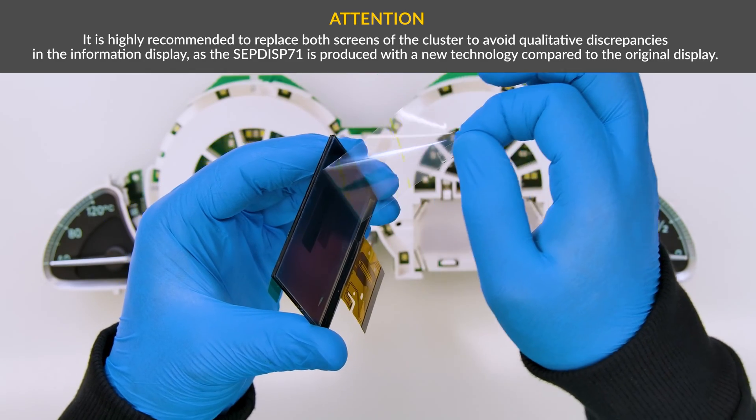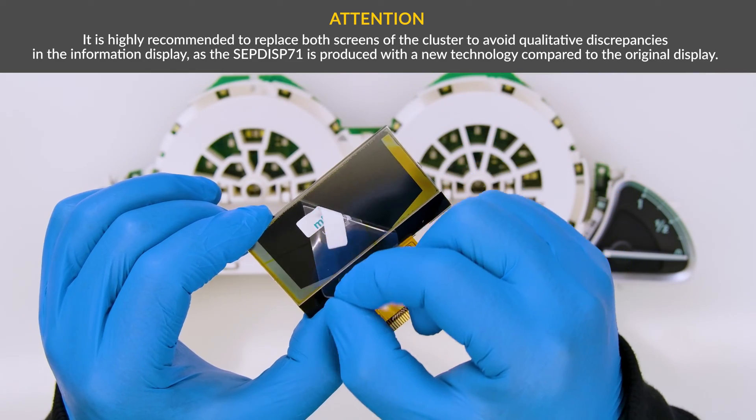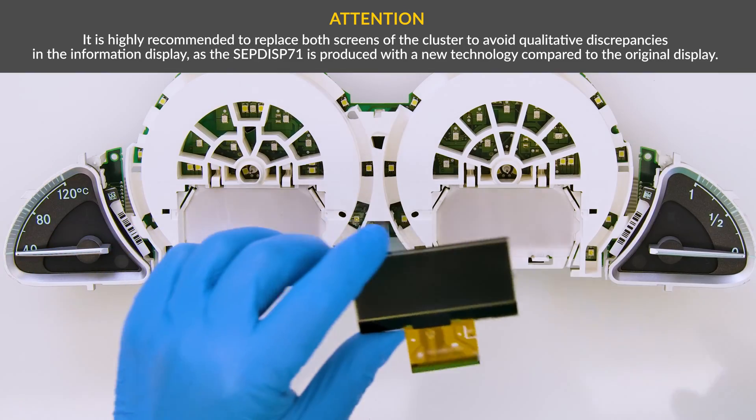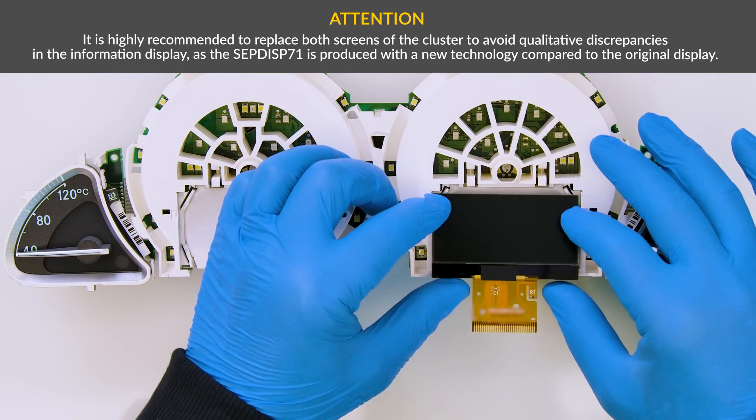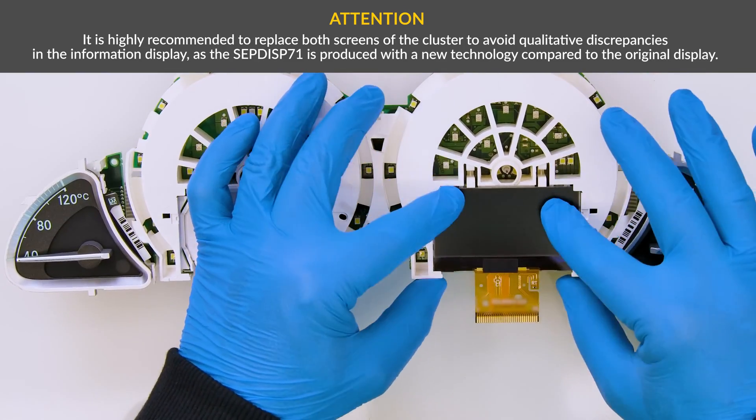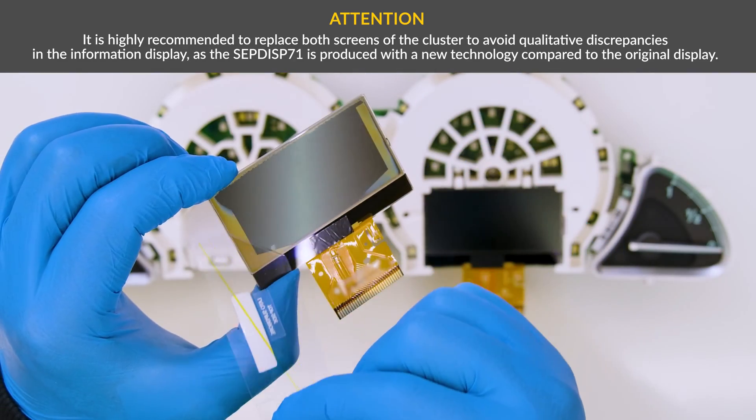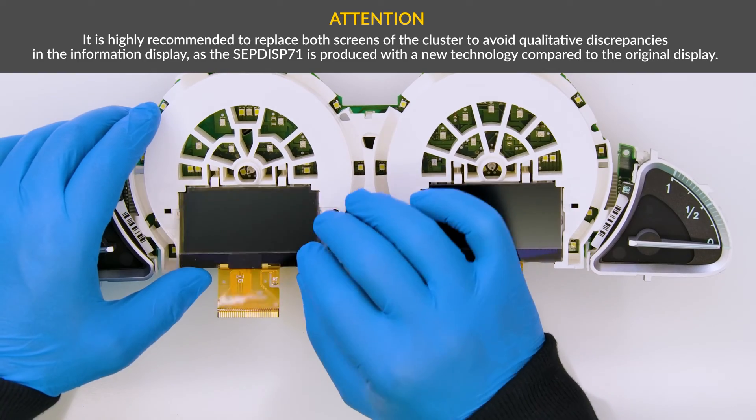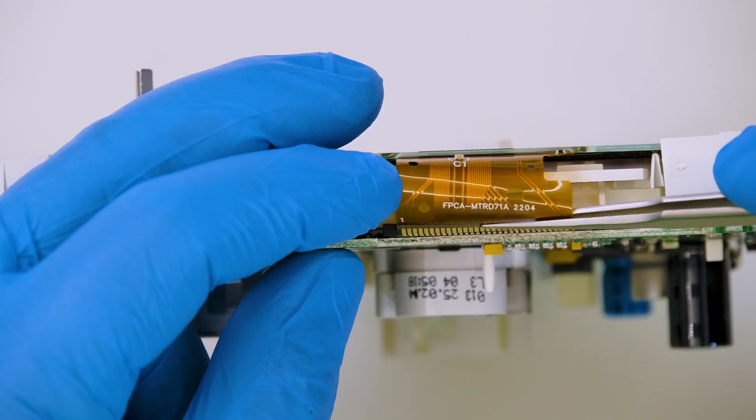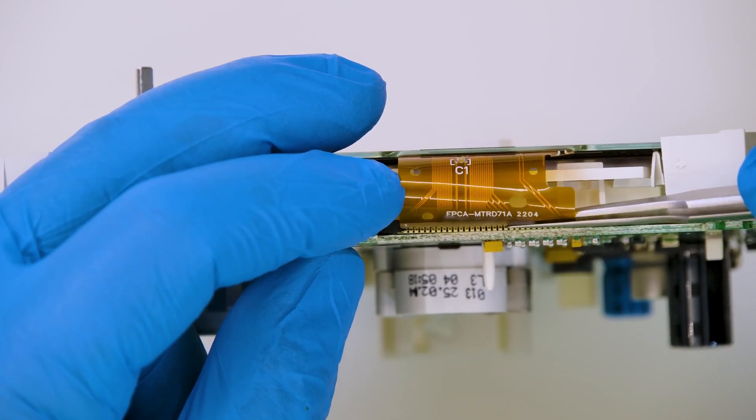Peel off the protective films from the new MiniTools displays and fit and secure them in their housing, as shown. Plug the two FPCs, closing the connectors.